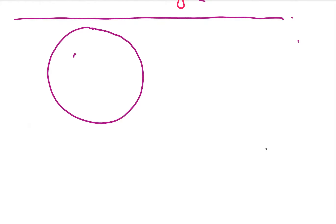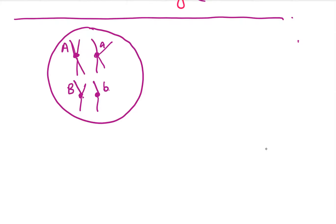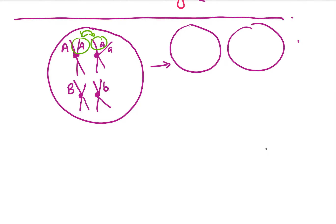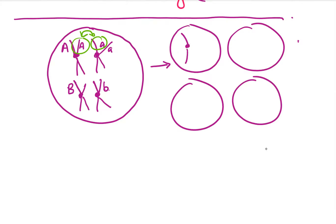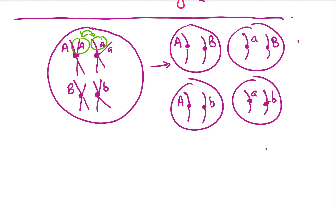Now let's look at the first scenario in which there are two genes that are unlinked. A parent cell contains gene A and gene B on two separate chromosomes. Each chromosome has a homolog that contains a recessive version of gene A and gene B. After meiosis, we're going to have an equal chance of four different gametes: Big A Big B, Big A little b, little a Big B, and little a little b.